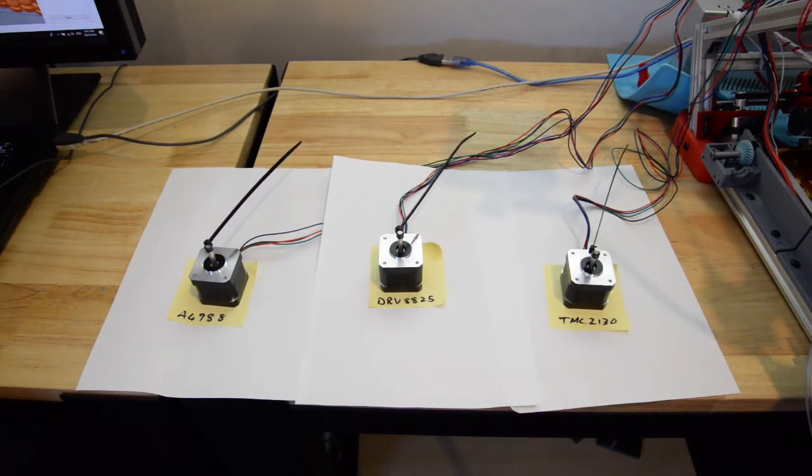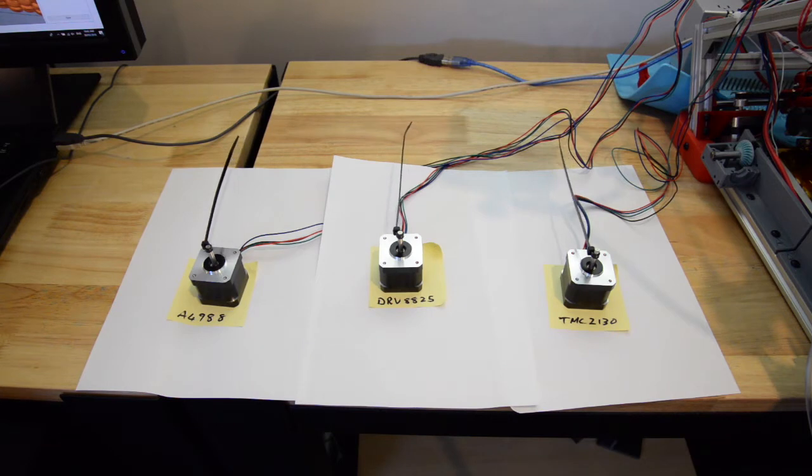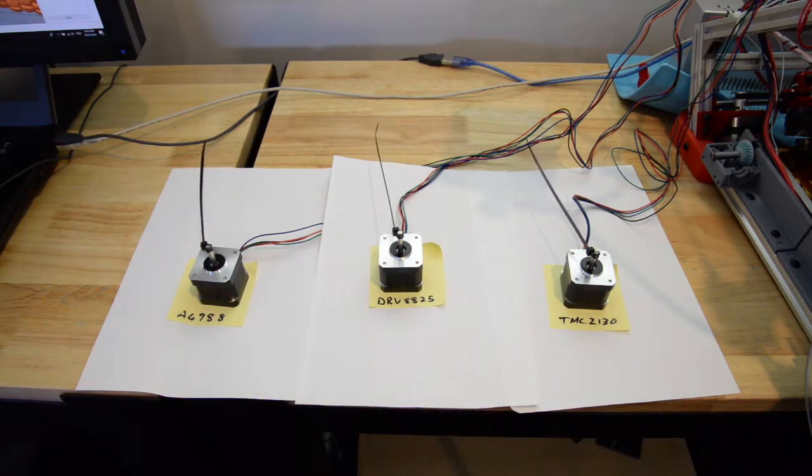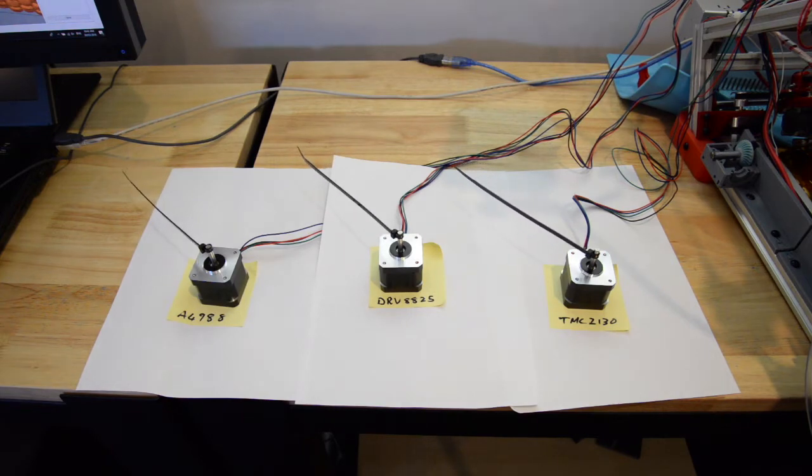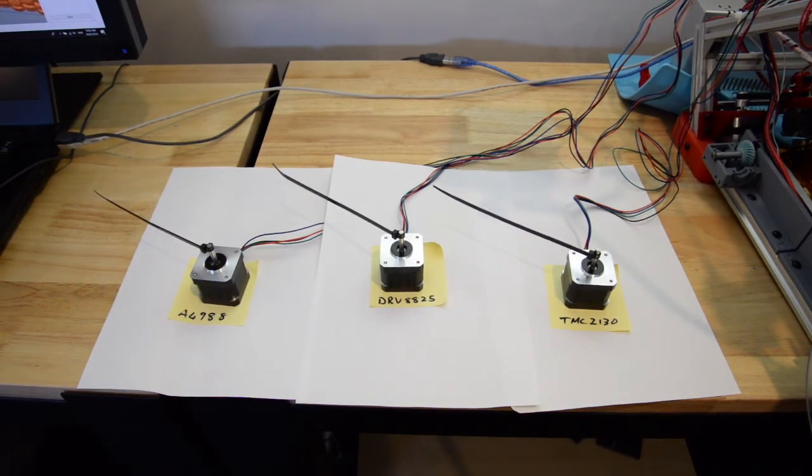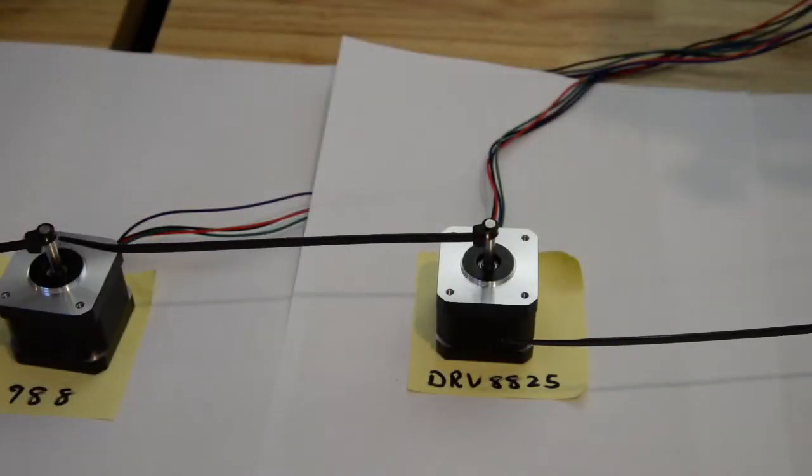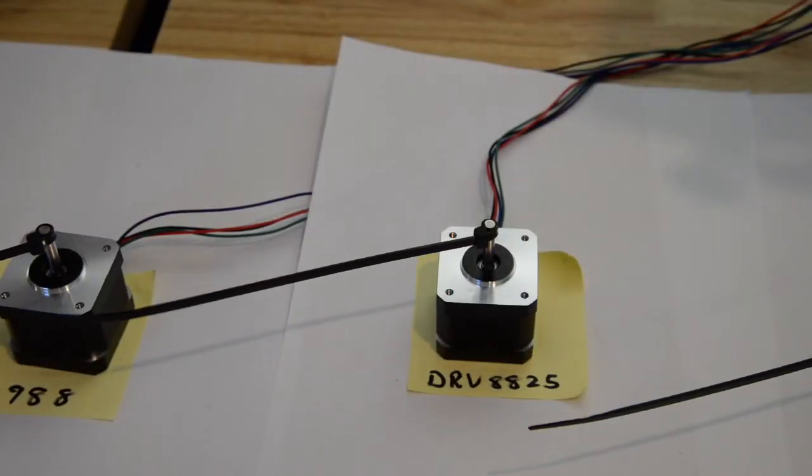The results are interesting. You can see the DRV8825 in the middle is jumping a little bit. The A4988 on the left is pretty smooth, and the TMC2130 is very smooth, the one on the right. Here's a close-up.